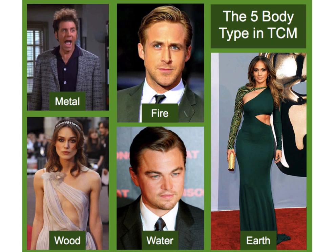What doesn't work as well for fire types is endurance or long exercise like marathons. The metal body type is wider at the shoulder and smaller at the waist and legs — kind of the opposite of earth. The metal personality is definitely wider-shouldered, much more square, much more muscular, with a square face and square shoulders and a trimmer waist. Someone like Arnold Schwarzenegger would be a metal body type. These people do very well in swimming and anything involving a lot of upper body. They don't do well in running because their upper body is too heavy for their legs.